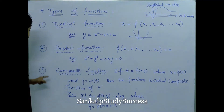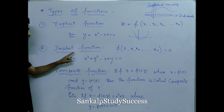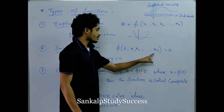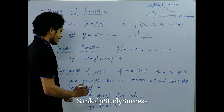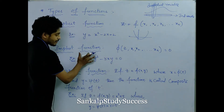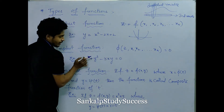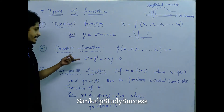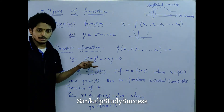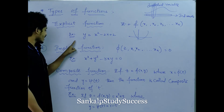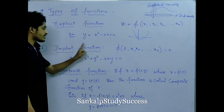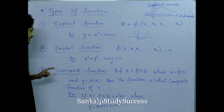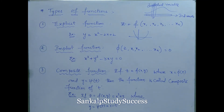Implicit function is: phi of z, x1, x2, and so on, equals to 0. That means x and y terms set equal to zero format. A higher order, second degree equation — you can explain it. At the second degree level, you also have implicit functions. In this format there are implicit functions.